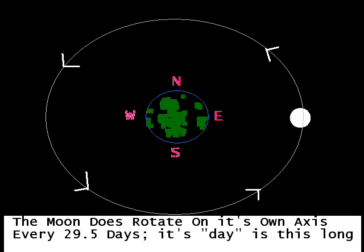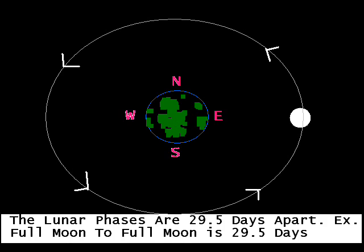The moon does rotate on its own axis every 29 and a half days, and that's how long a day is on the moon. The lunar phases from full moon to full moon are also 29 and a half days.